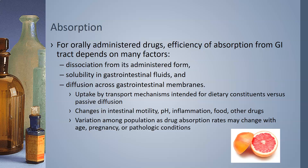Anything that causes changes in intestinal motility, pH, inflammation, food, and other drugs can all change how well a drug is absorbed. Variation among populations in drug absorption rates may also change with age, pregnancy, or pathologic conditions. For example, grapefruit can affect the absorption and/or metabolism of certain drugs — you'll see a warning saying do not take with grapefruit juice. It's serious: it can cause some drugs to not work, or in other cases cause toxic effects.